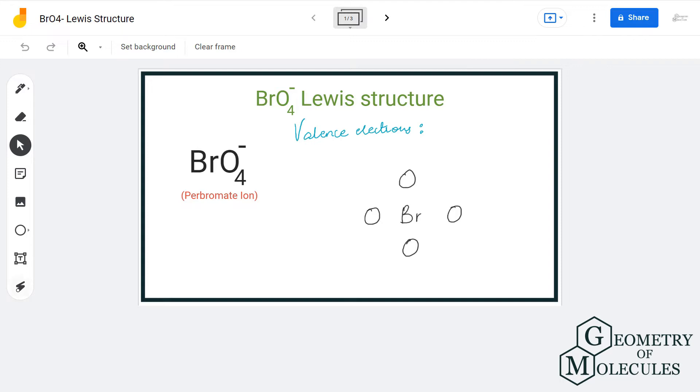Hi guys, welcome back to our channel. In today's video we are going to help you with BrO4 minus Lewis structure. It is a chemical formula for perbromate ion, and to determine its Lewis structure we will first look at the total number of valence electrons.